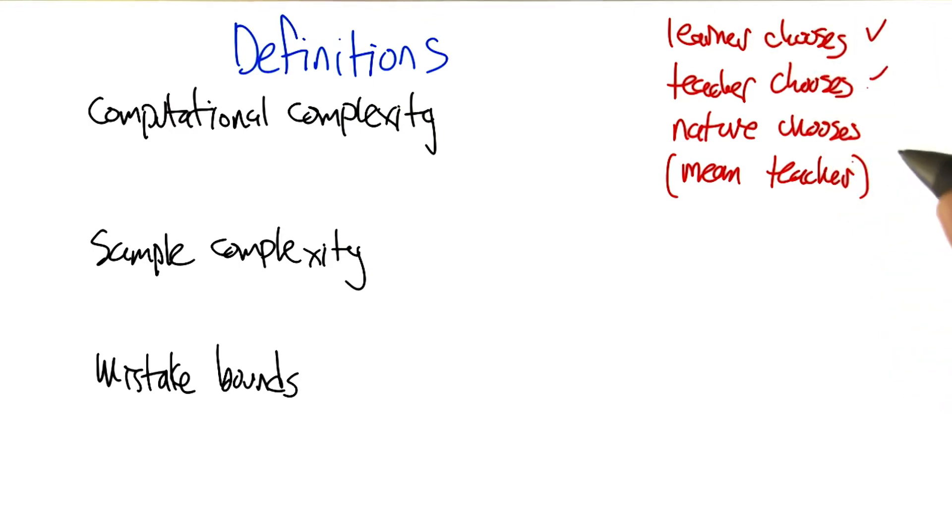Okay. So we kind of dealt with three of these, but we haven't really talked about the nature chooses case yet. And that's, in some ways, the most interesting and relevant, and in other ways, the most complicated, because you have to really take into consideration this space of possible distributions.